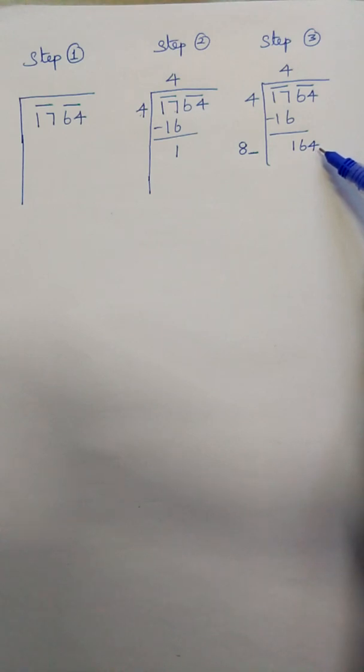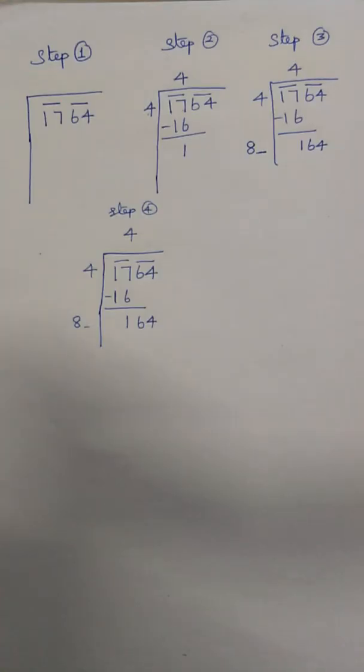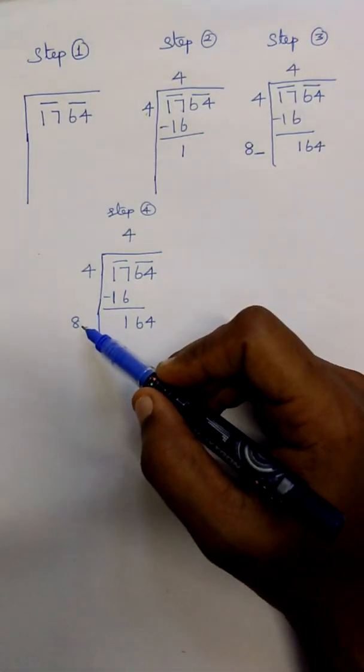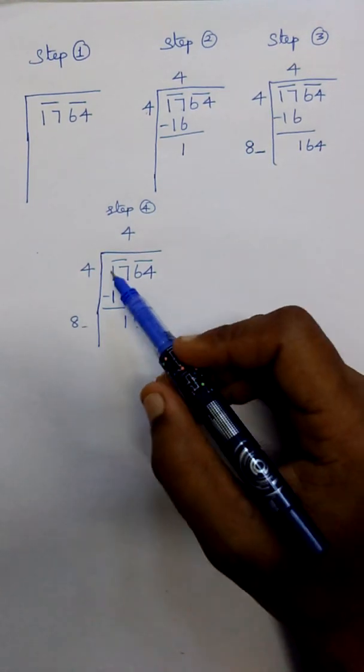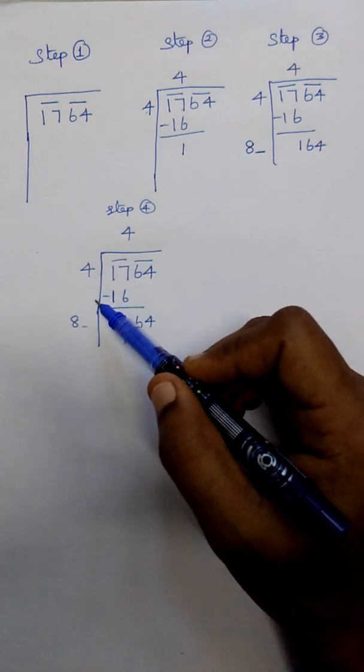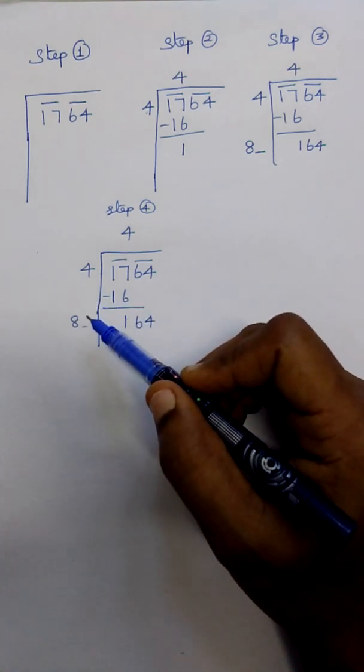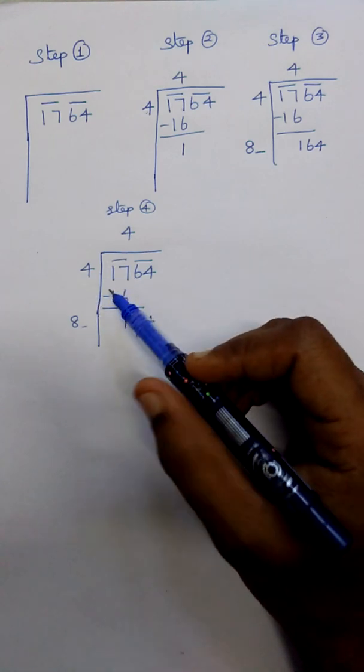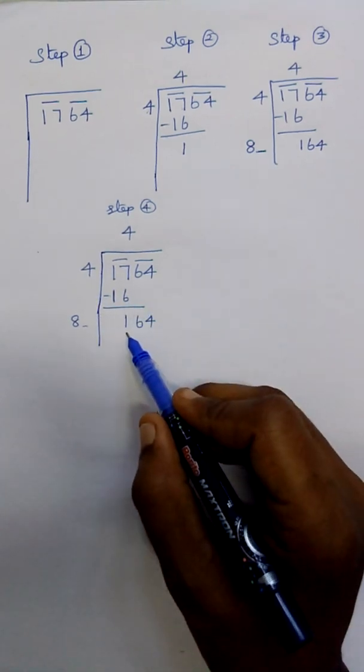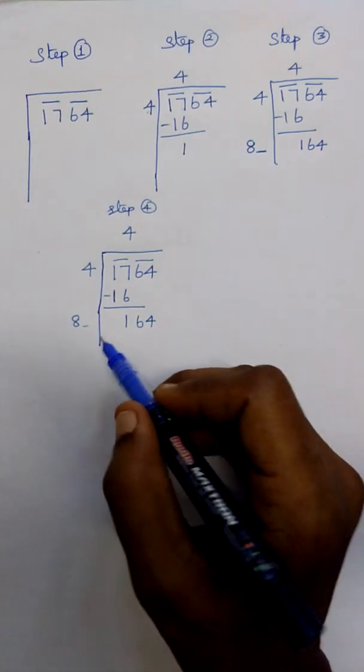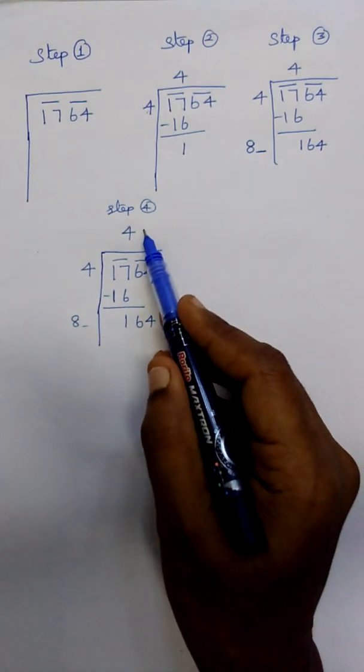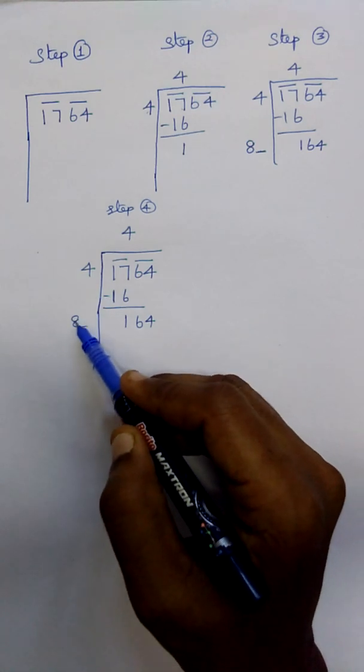Step four: the new divisor is followed by the square number. So here, one hundred and sixty-four. We have to put one more square number here and here, and we will get one hundred and sixty-four.